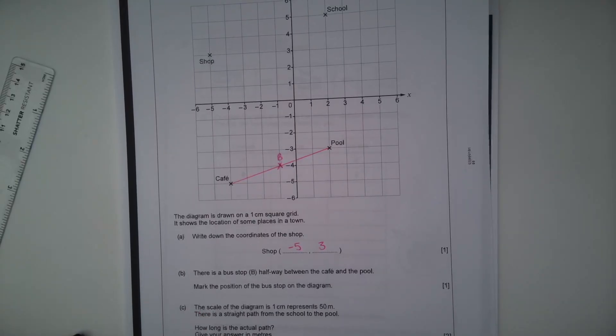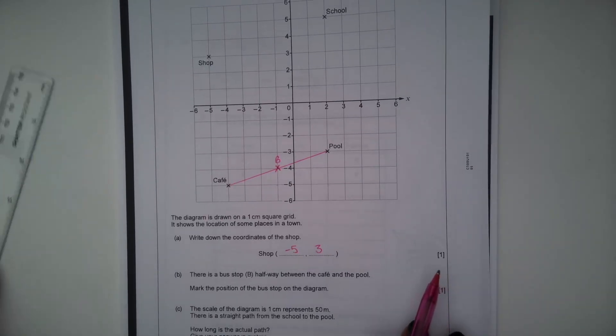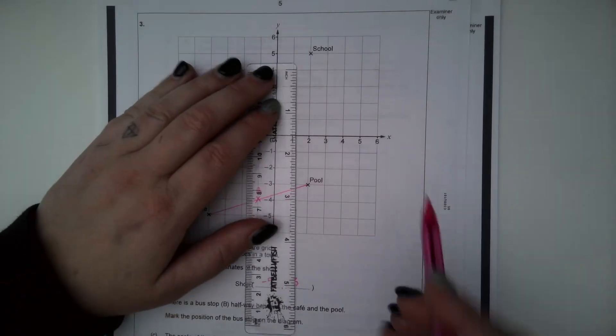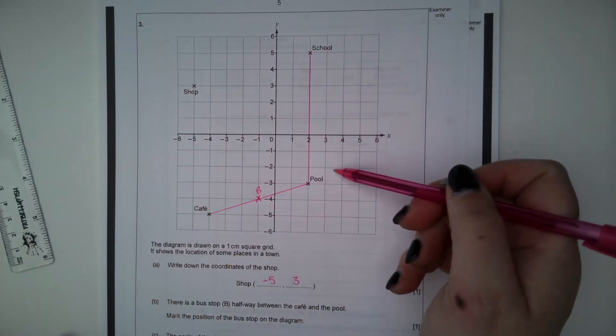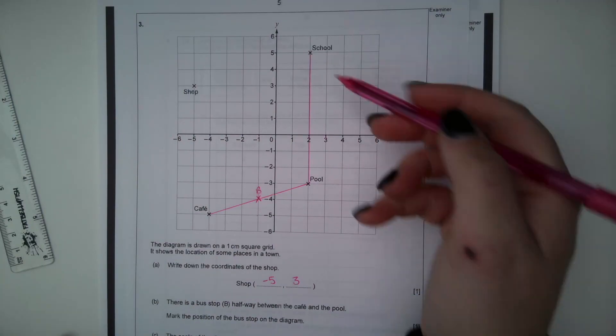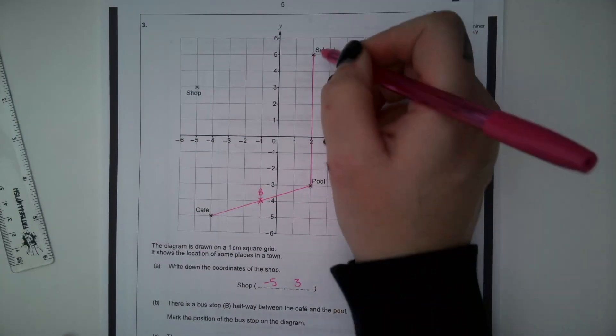Part C, the scale of the diagram is one centimeter represents 50 meters. There is a straight path from the school to the pool. How long is the actual path? Give your answer in meters. So we're going from the school to the pool.